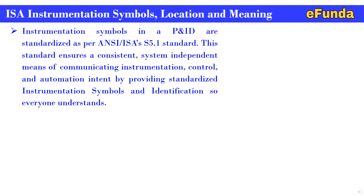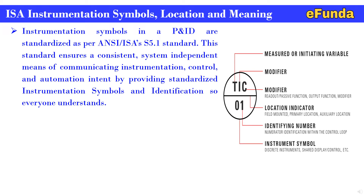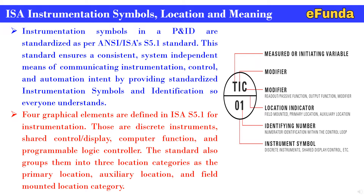ISA instrumentation symbols in a P&ID are standardized as per ISA S5.1 standard. The standard ensures a consistent, system-independent meaning for communicating instrumentation, control, and automation intent by providing standardized symbols and identification. Graphical elements defined in ISA S5.1 include discrete instruments, shared control displays, computer functions, and programmable logic controllers. The standard also groups them into three location categories: primary location, auxiliary location, and field-mounted location.